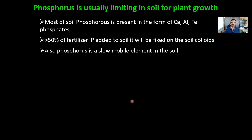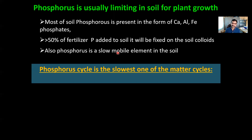Phosphorus is usually limiting in soil for plant growth because most soil phosphorus is present in the form of calcium, iron, and aluminum phosphates. Even more than 50% of chemical fertilizers added to soil are converted into calcium, iron, and aluminum phosphates and become fixed into soil colloids. Also, phosphorus is one of the slowest moving elements in soil solution. Because of all these reasons, the phosphorus cycle is said to be the slowest among all matter cycles.